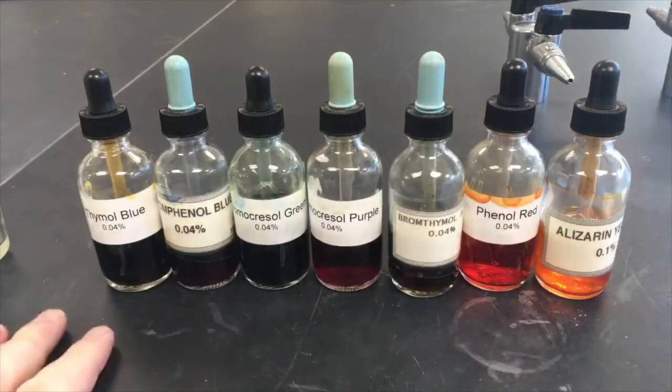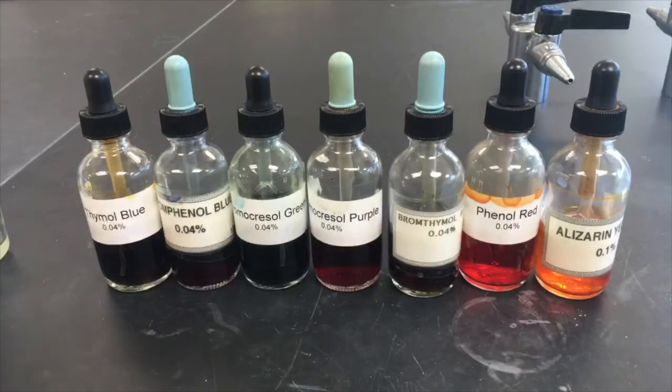Here are the seven different indicators that are going to be used: thymol blue, bromophenol blue, bromocresol green, bromocresol purple, bromothymol blue, phenol red, and alizarin yellow.